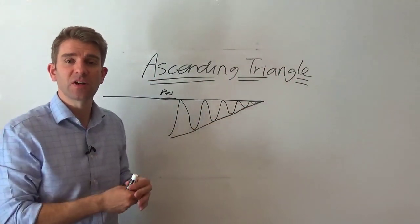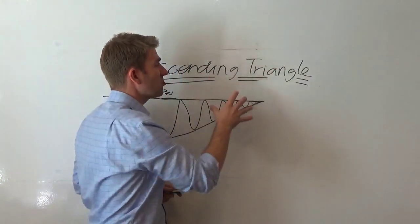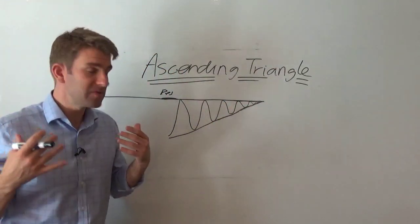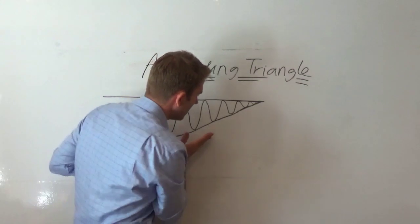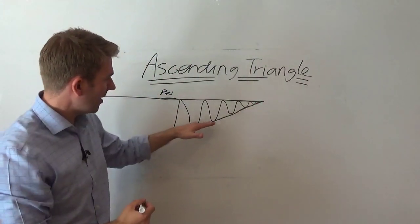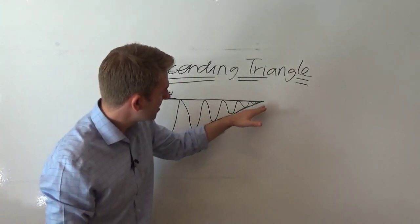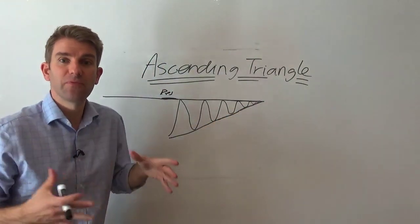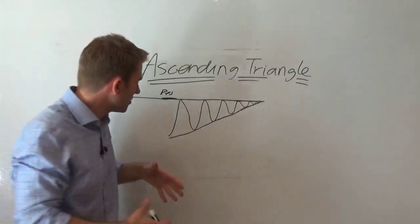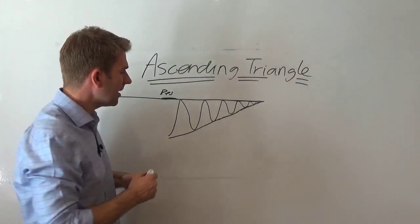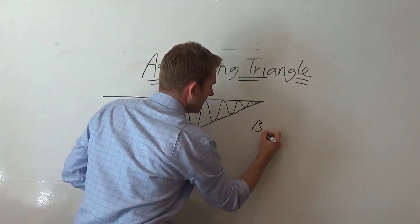The ascending triangle where it comes into play is that we have an uptrend below it, higher lows pushing up to this point here, where something has to happen, something has to give.